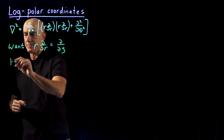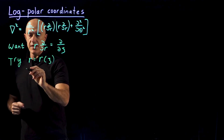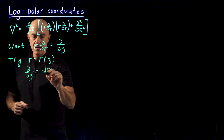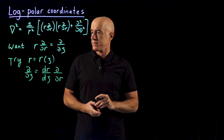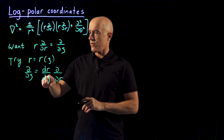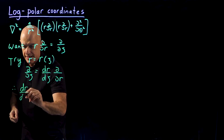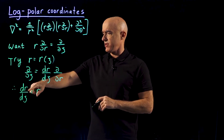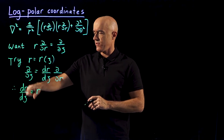So we want to try R being a function of KSI, where this derivative D/D KSI is equal to the derivative of R with respect to KSI times the partial with respect to R, from the chain rule. Now if we compare this expression with this expression, we see that this derivative of R with respect to KSI should be equal to R. So we have dR/dKSI equal to R, which is just a simple ordinary differential equation.